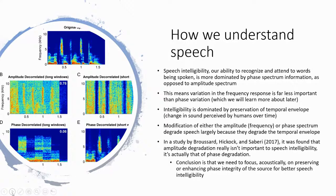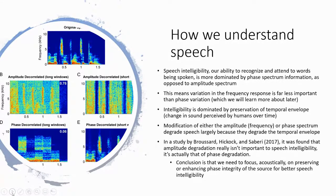This means that variation in frequency response is far less important — not unimportant, but less important than phase variation. It's important to remember that modifications to the frequency response of speech will also affect phase. So one of the reasons why those modifications impact intelligibility is actually that they're affecting phase as well. Our ability to understand speech is really dominated by preservation of the temporal envelope — that's the change in sound perceived by humans over time. Preserving that helps us attend to words better. Even though we used to think frequency was dominant, it actually appears to be phase spectrum degradation that's really what's going on.